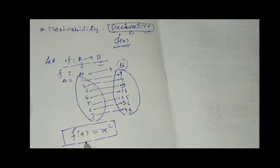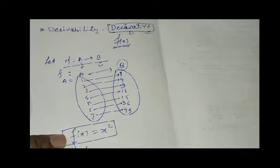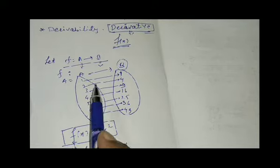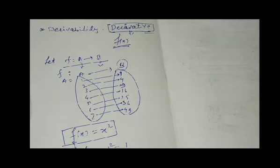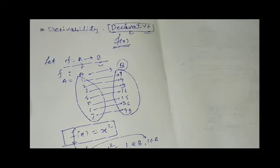So f(x) = x² means f is the function — the rule by which elements of set A are associated to elements of set B. For instance, f(1) = 1² = 1, so 1 belongs to set A and 1 belongs to set B. Similarly, f(2) = 2² = 4, so 2 belongs to A and 4 belongs to B. The relation from A to B is the squaring rule.